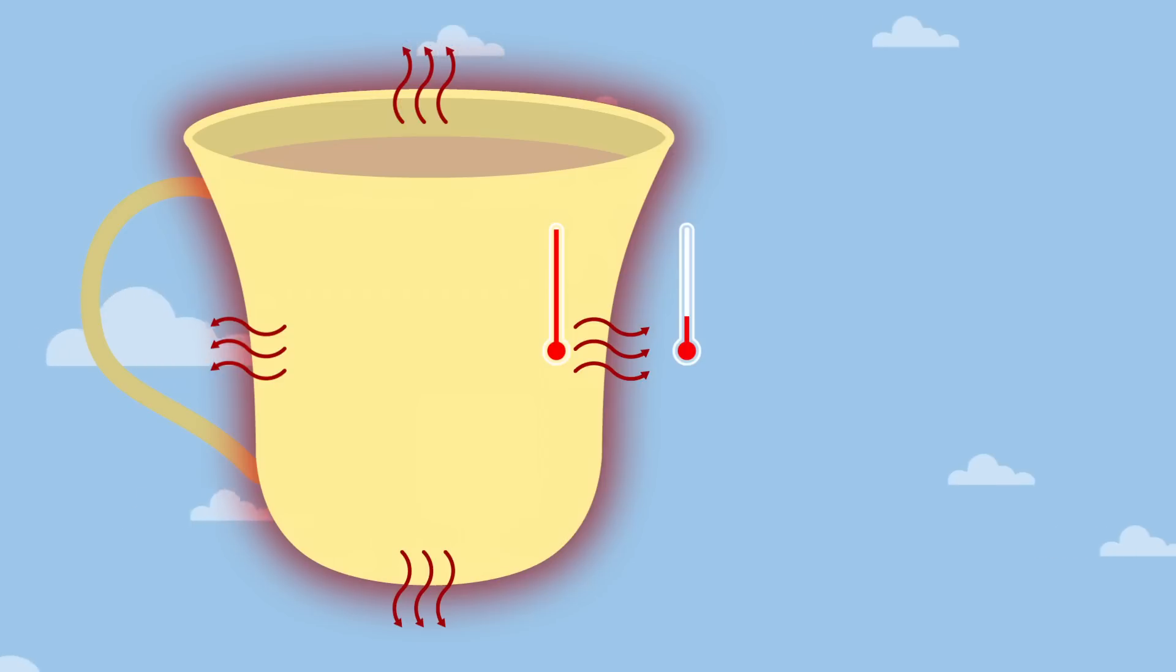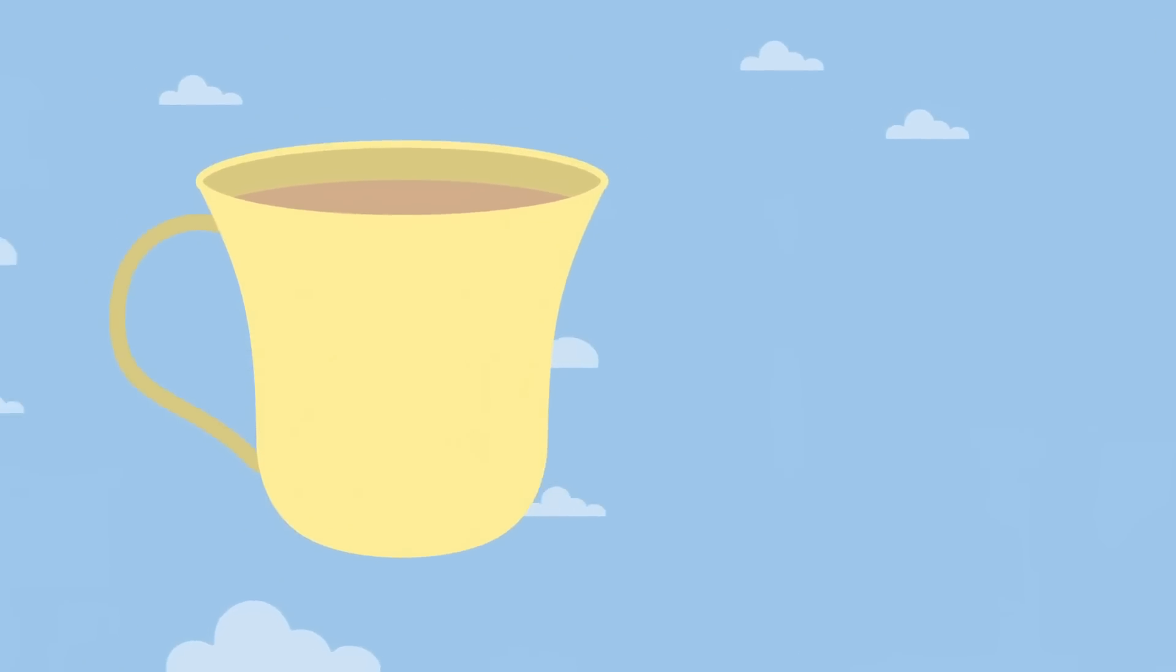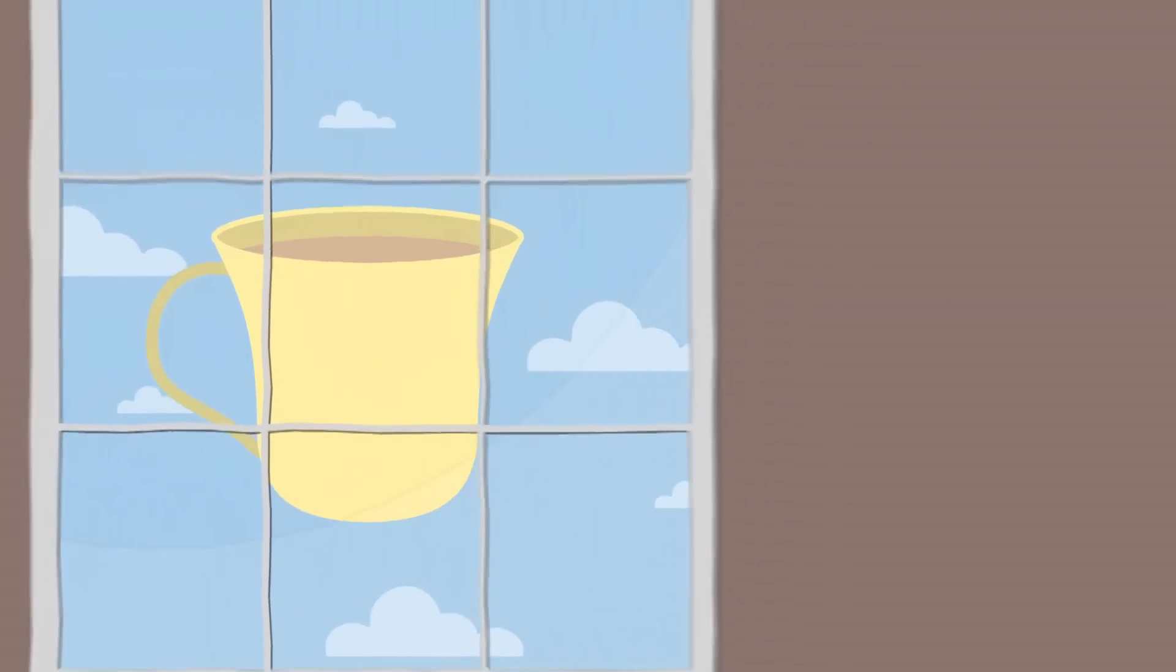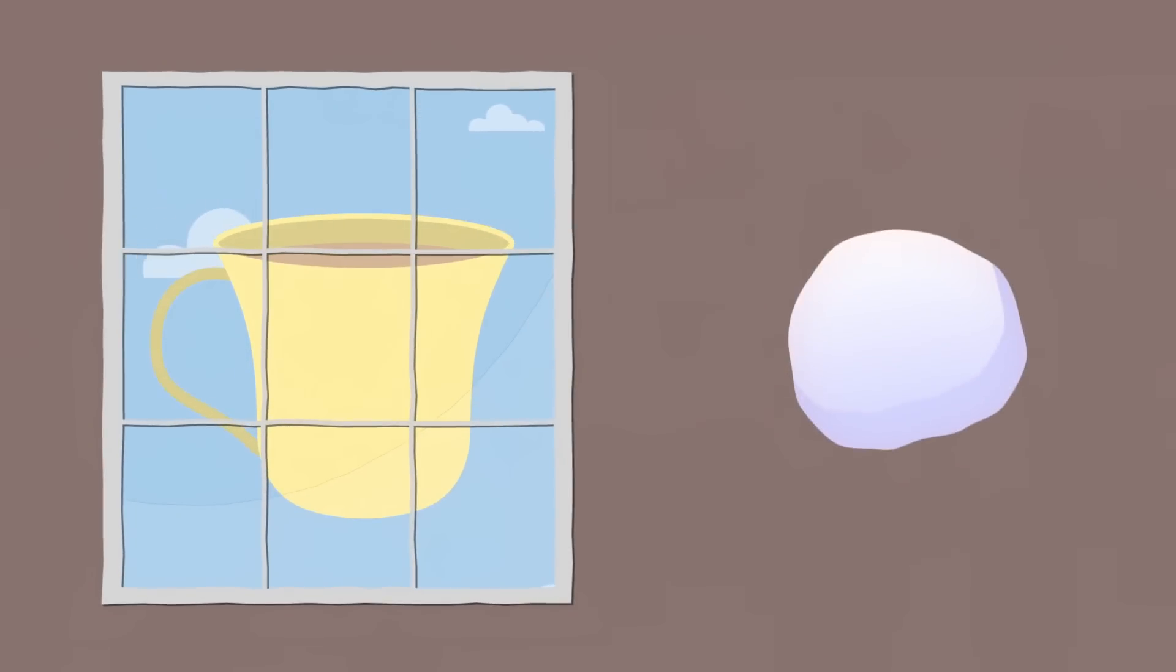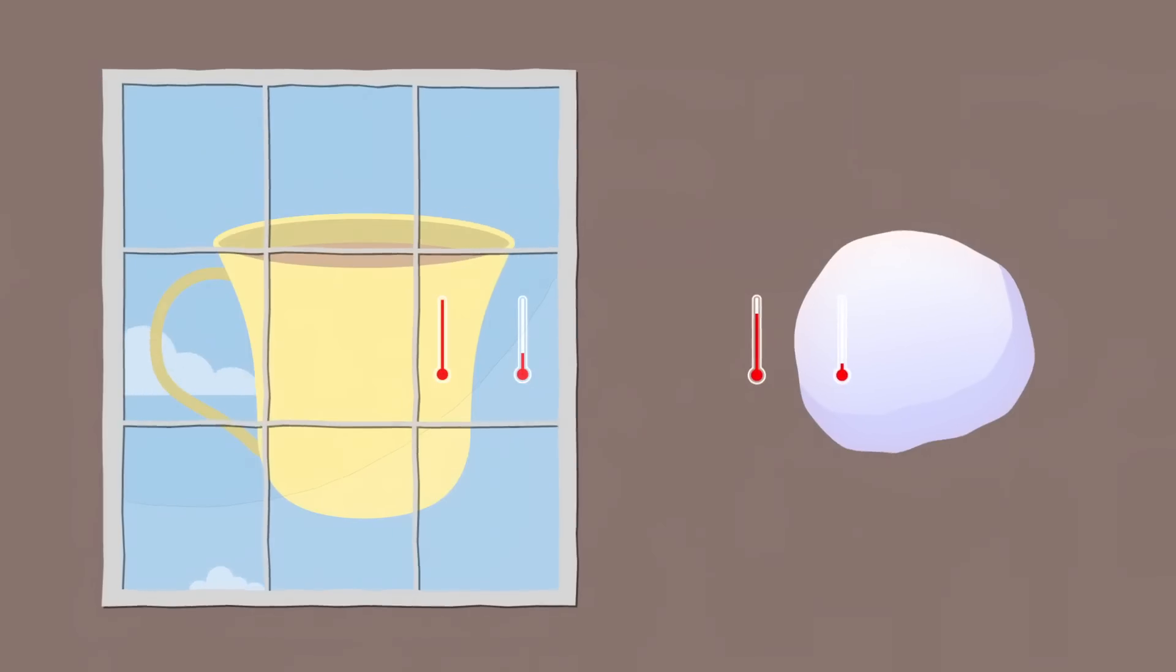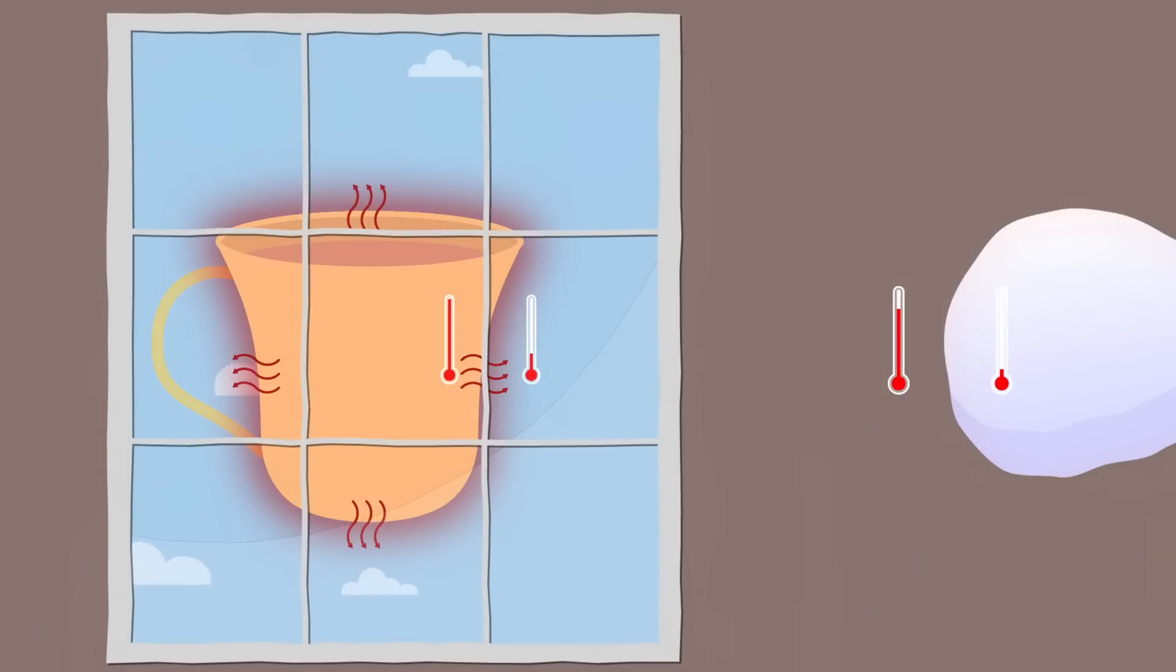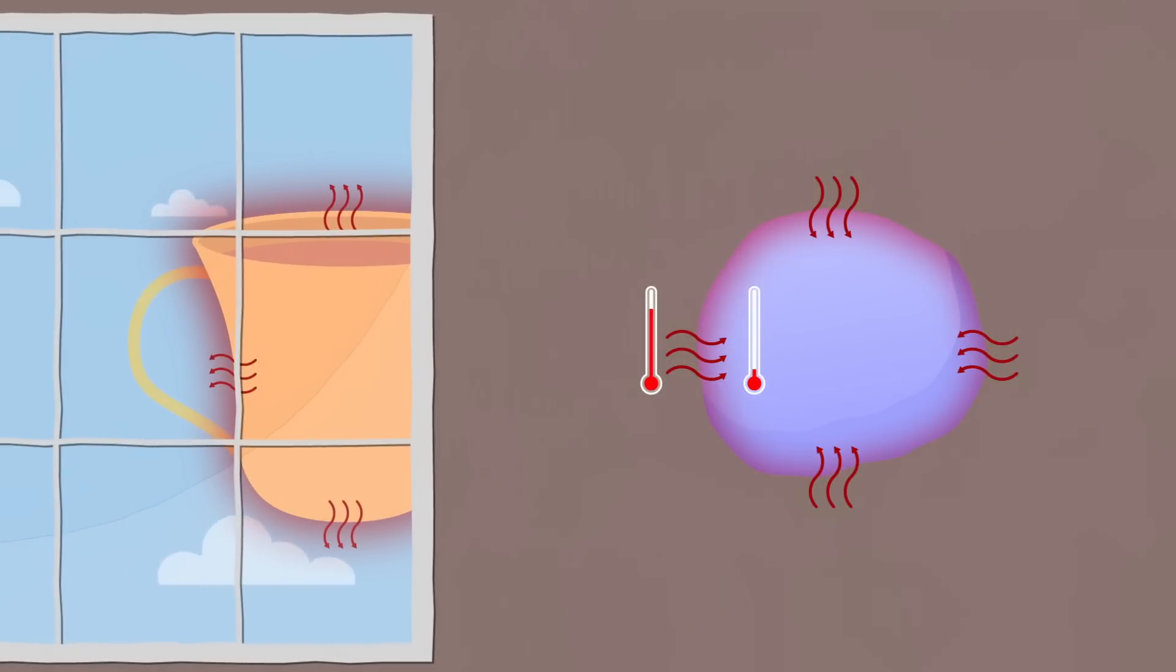And the bigger the difference in temperature, the more energy the air can absorb. This is why our cup cools down quicker when it's outside, and for that matter, why a snowball melts quicker when it's inside. In both cases, it's the difference in temperature that causes the heat transfer, either from the warm cup to the cold air, or from the warm air to the cold snow.